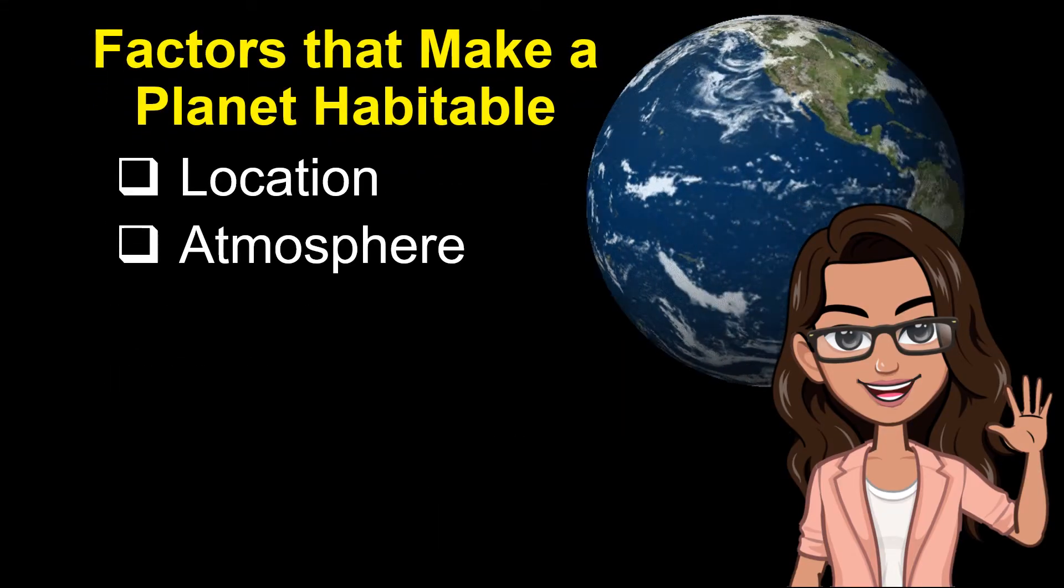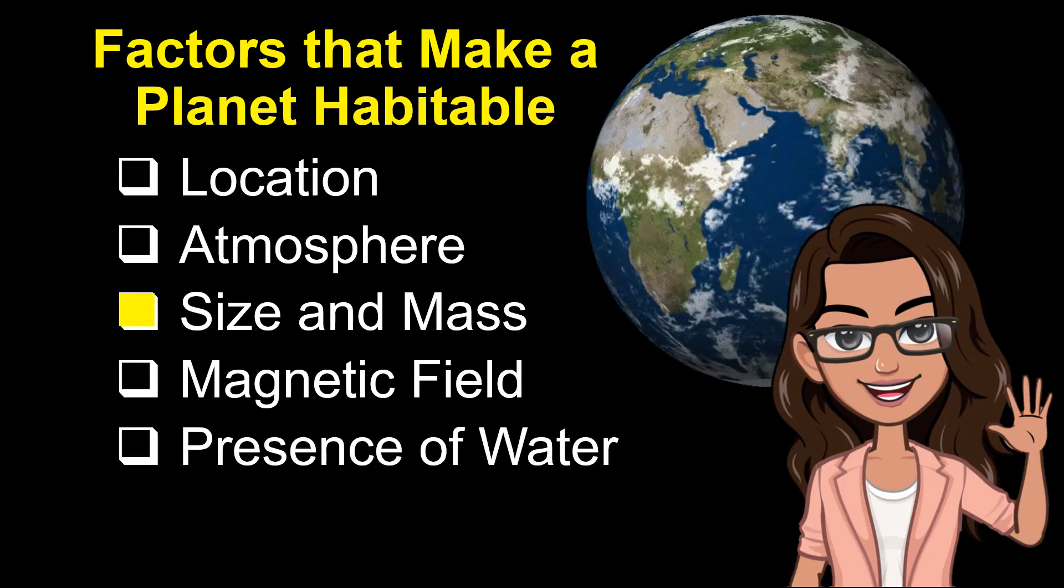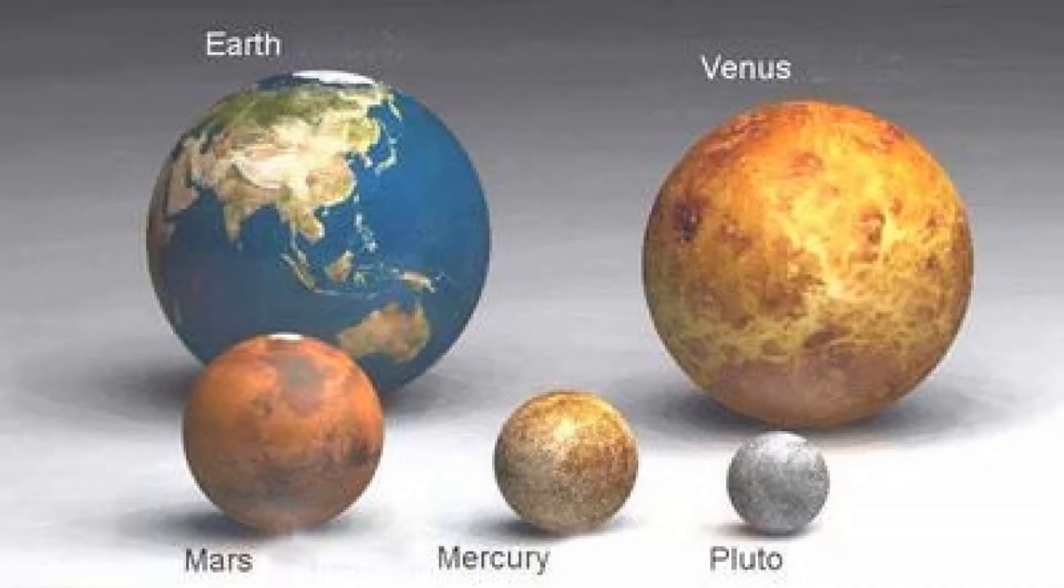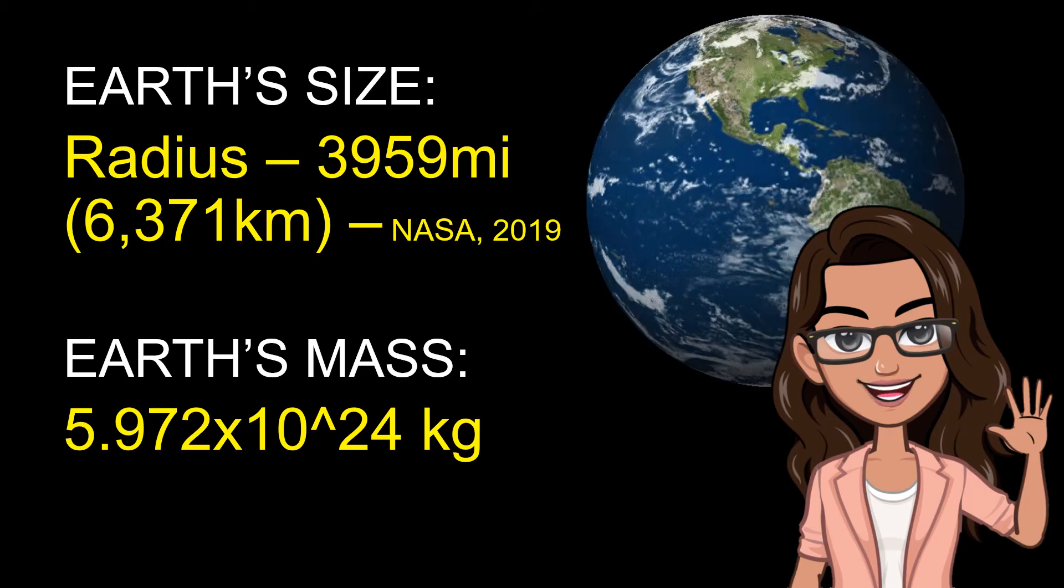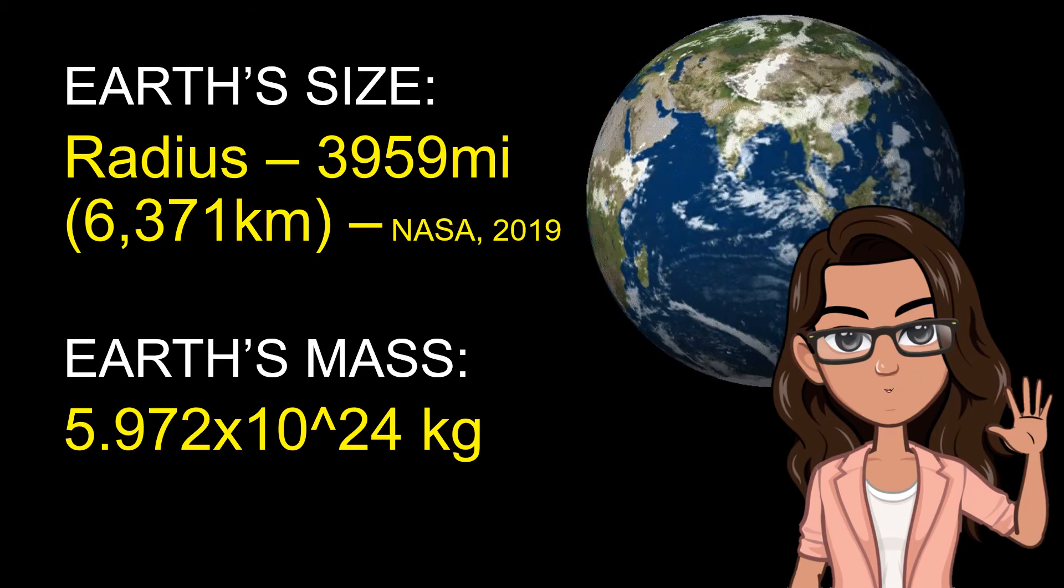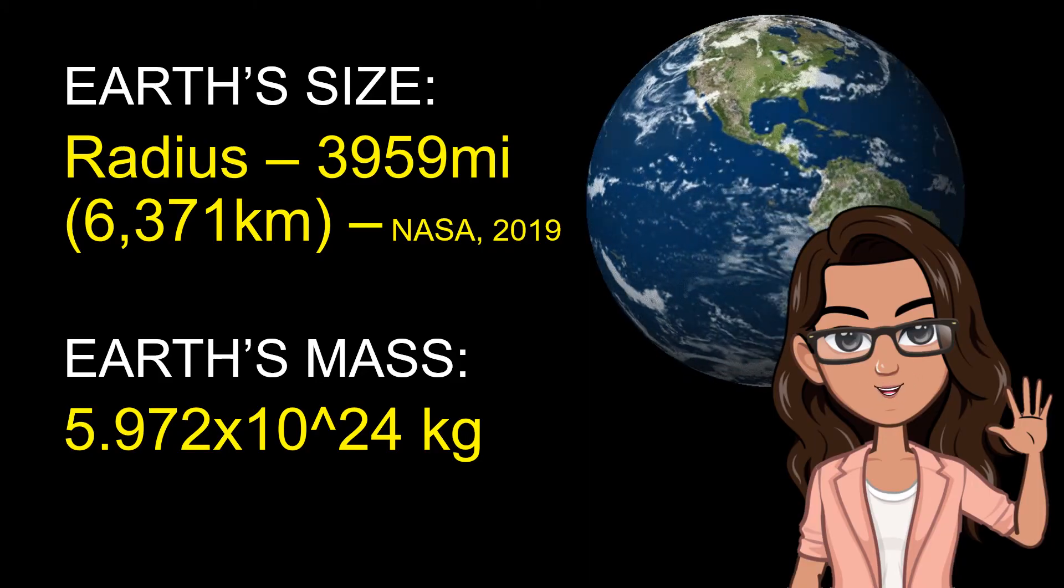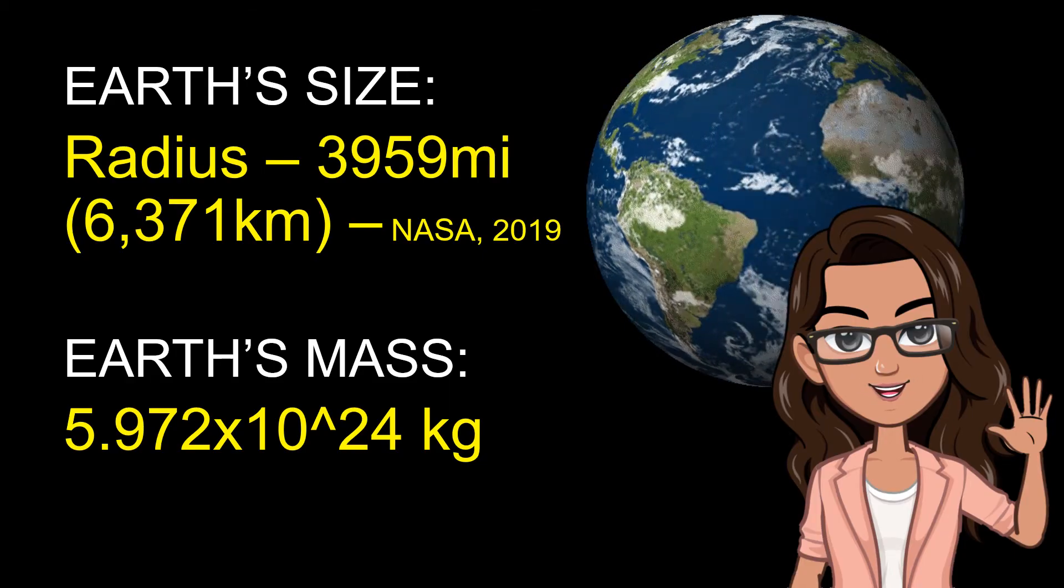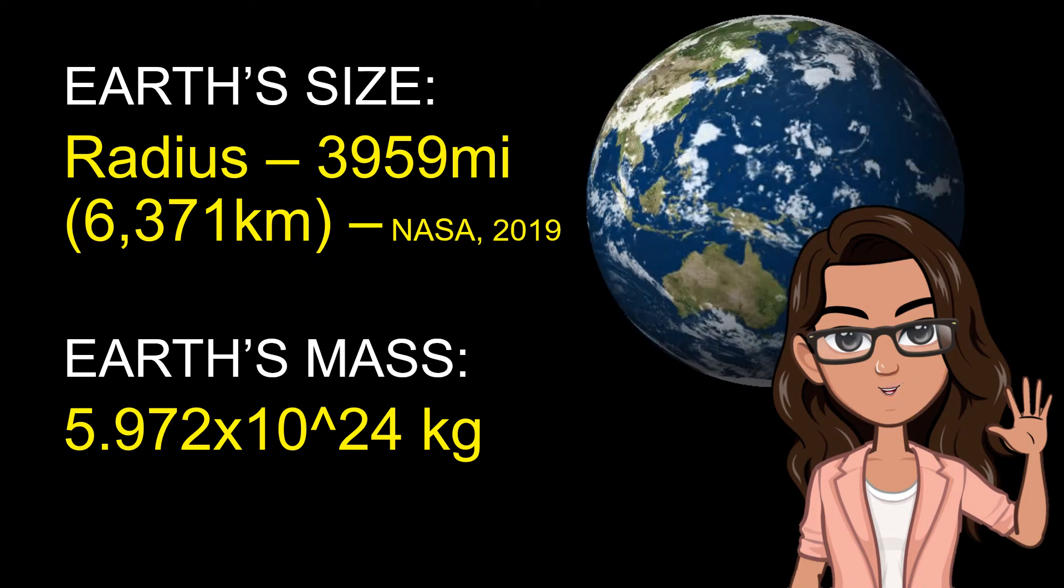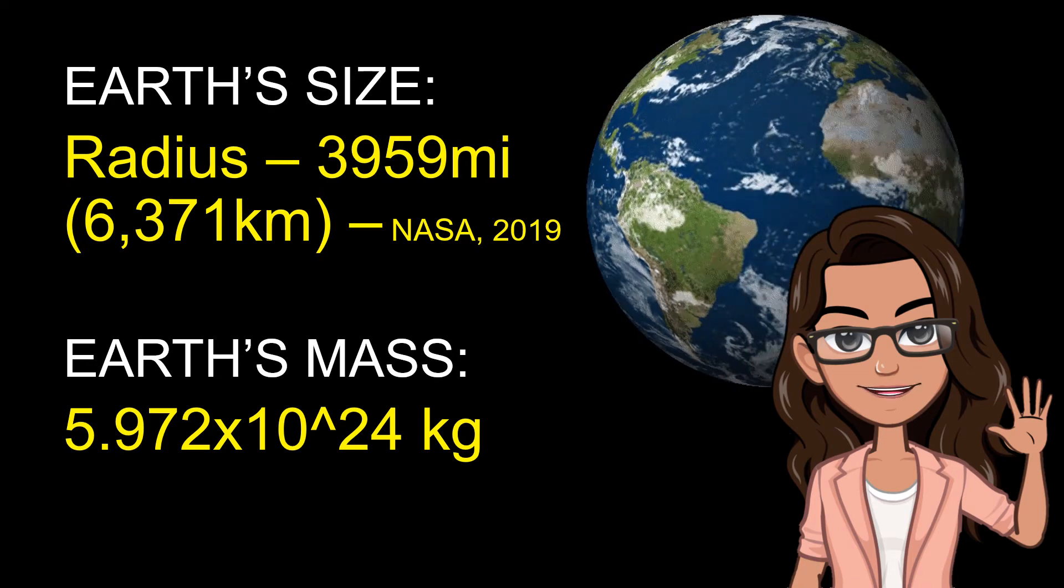The next factor is the size and mass. This is the relative size of planet Earth as compared to other terrestrial planets like Venus, Mars, and Mercury, as well as that of Pluto, which is now considered not a planet. Let's talk about the Earth's size. Its radius is 3,959 miles or 6,371 kilometers. That is according to NASA report in 2019. It has mass of 5.972 times 10 raised to 24 kilograms.